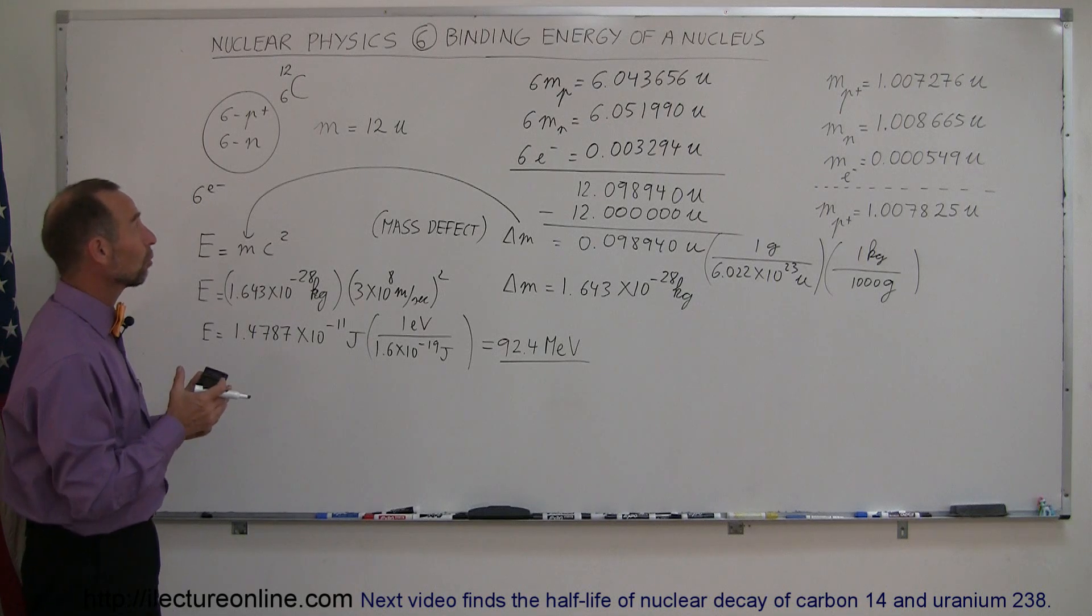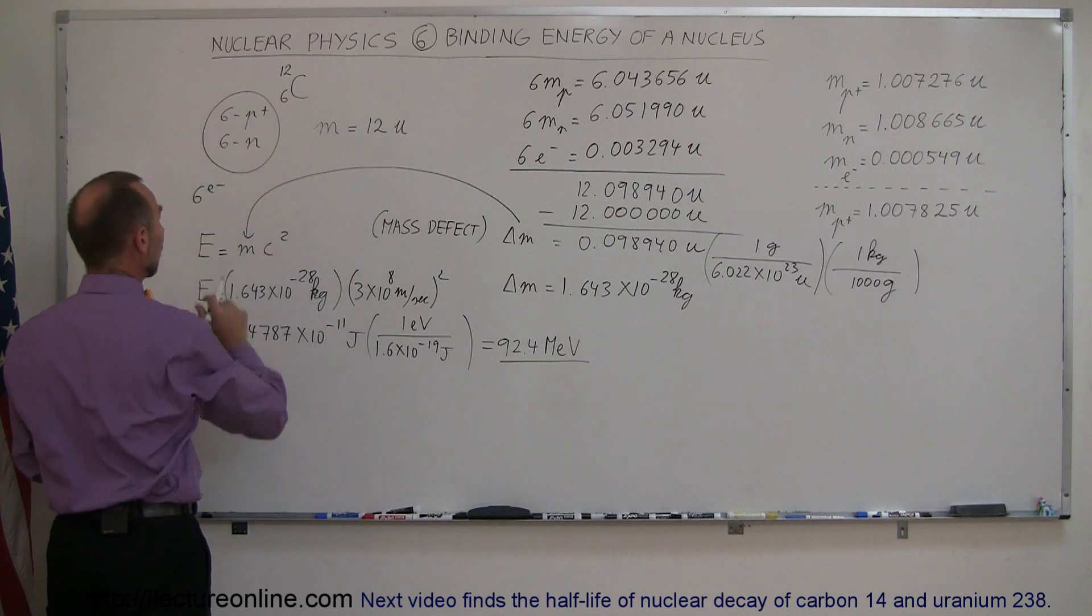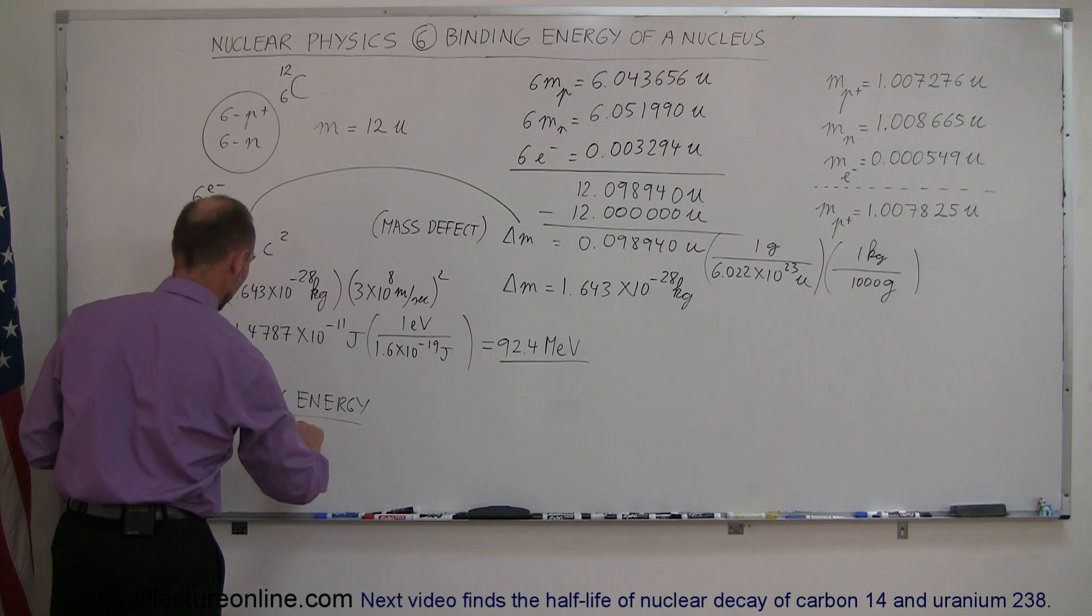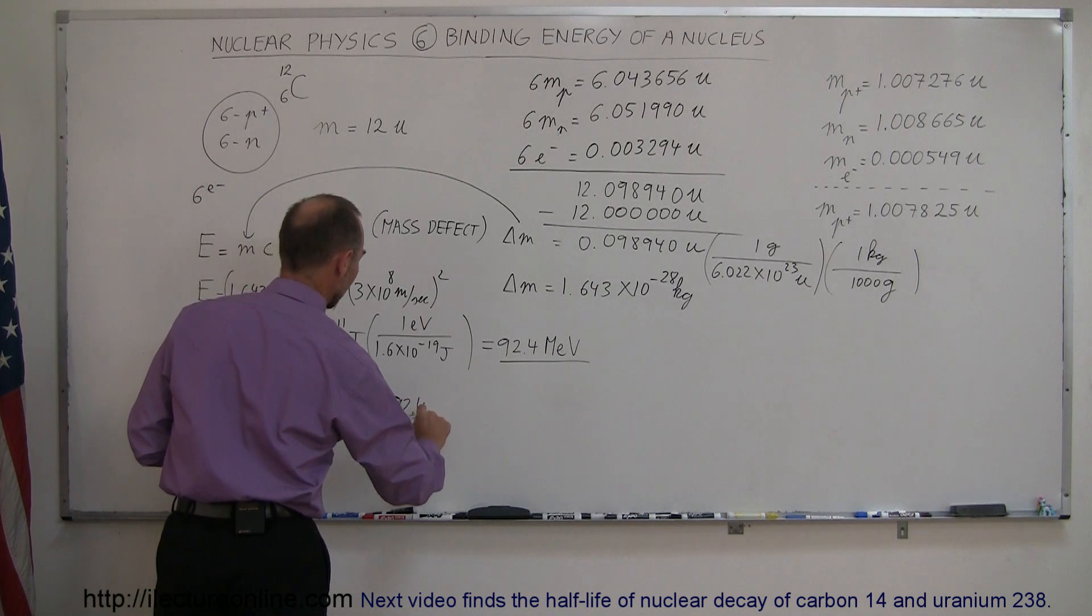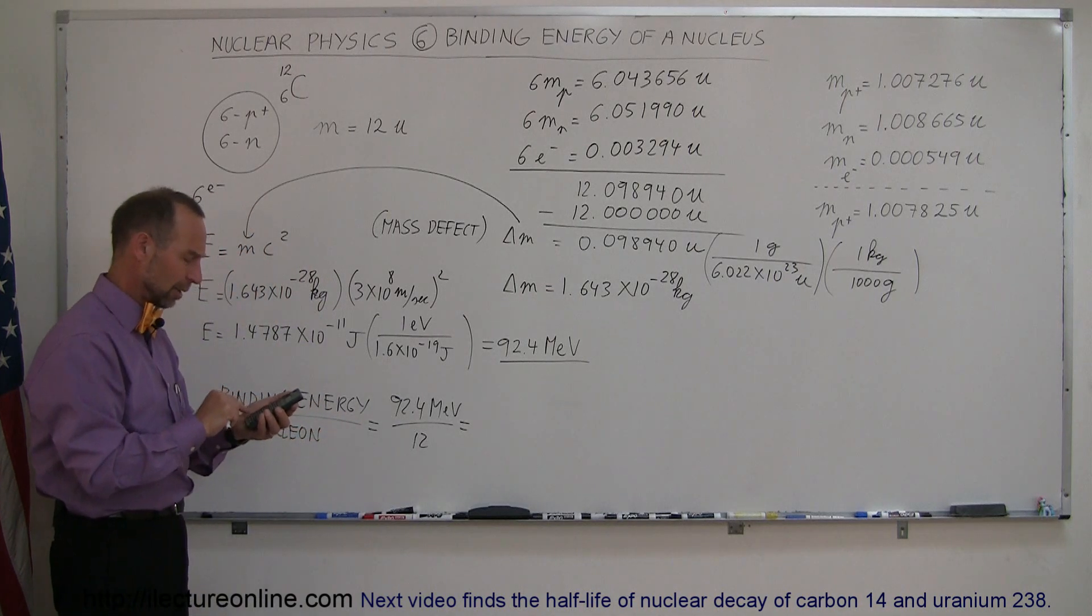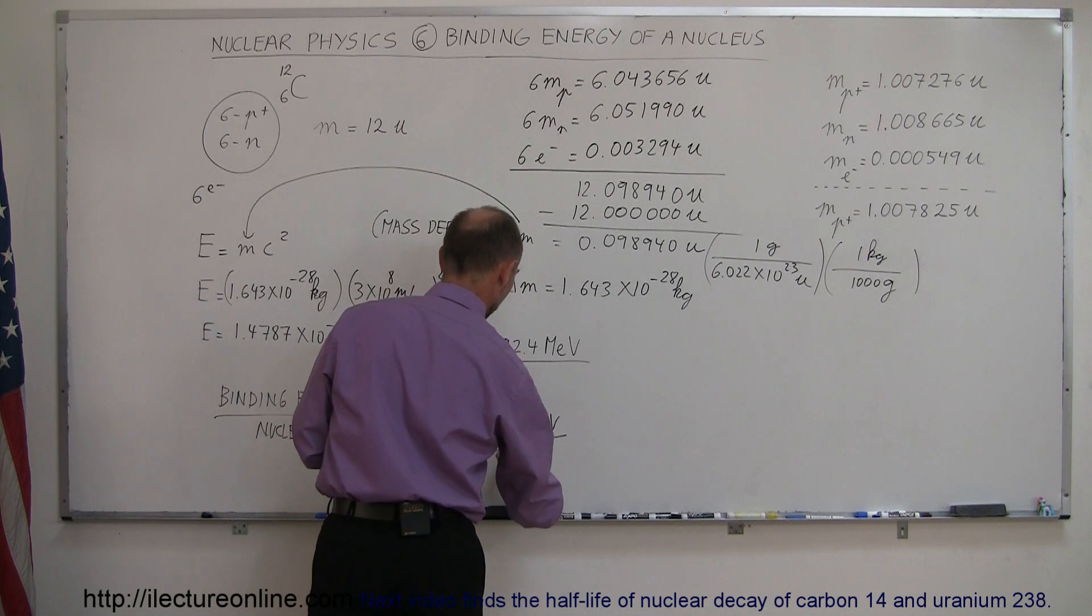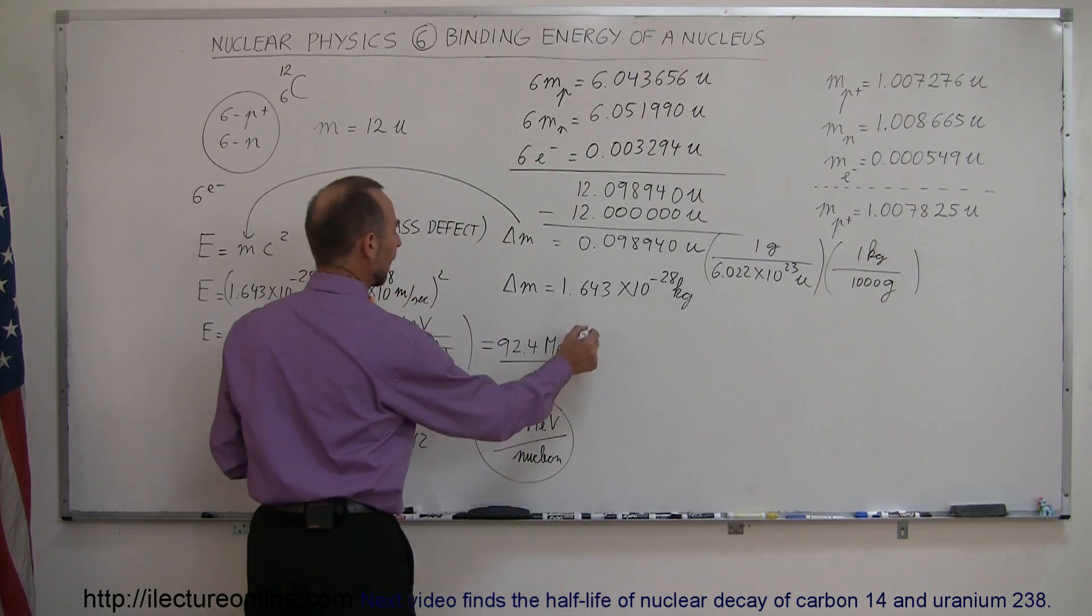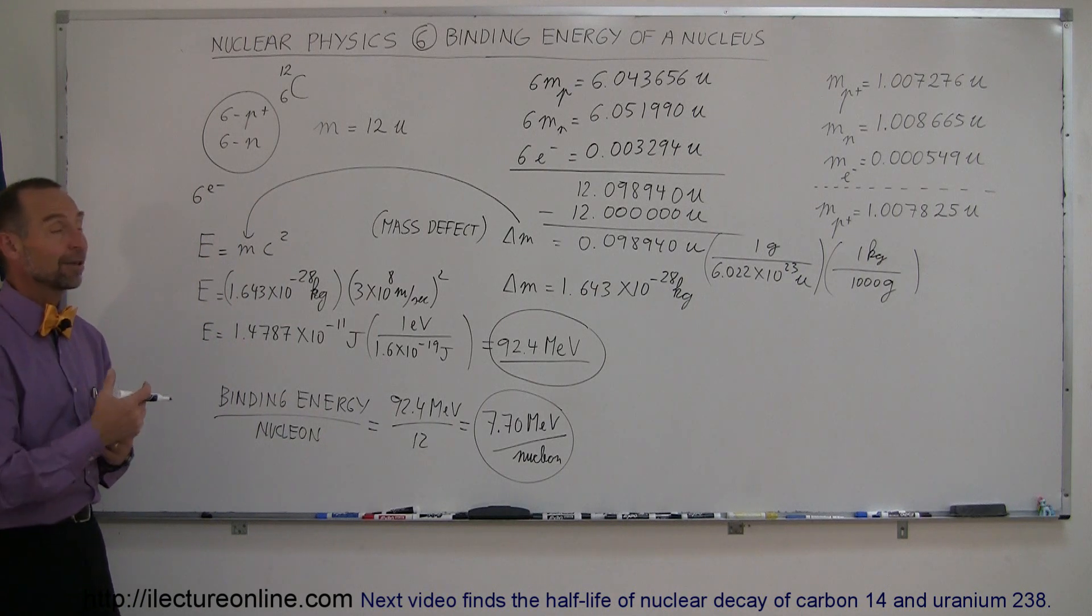Sometimes they want to express that in terms of the binding energy per nucleon. Since there's 12 nucleons in here, we can say that the binding energy per nucleon is equal to 92.4 MeVs divided by 12. So we divide that by 12, and that gives us 7.70 MeVs per nucleon. And that would be the binding energy per nucleon, and that would be the total binding energy of a carbon nucleus. And that's how you find the binding energy.